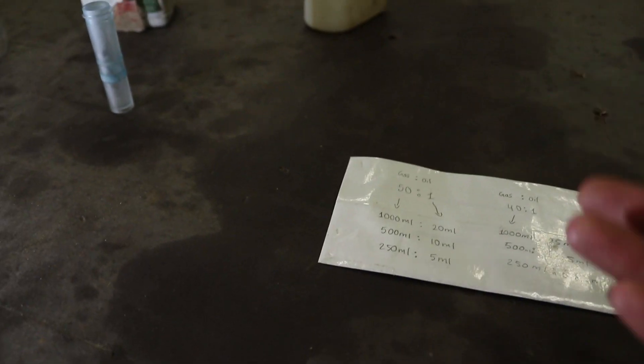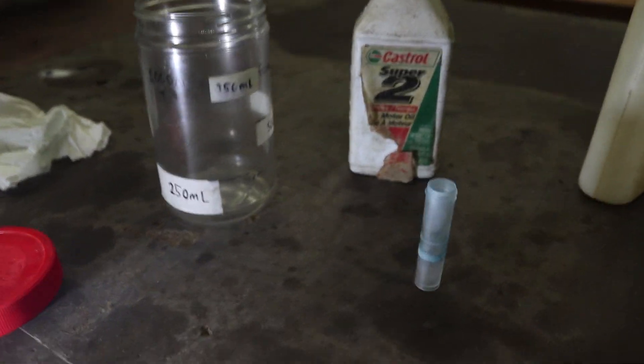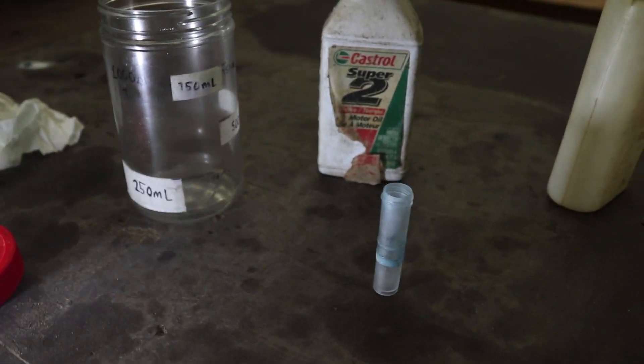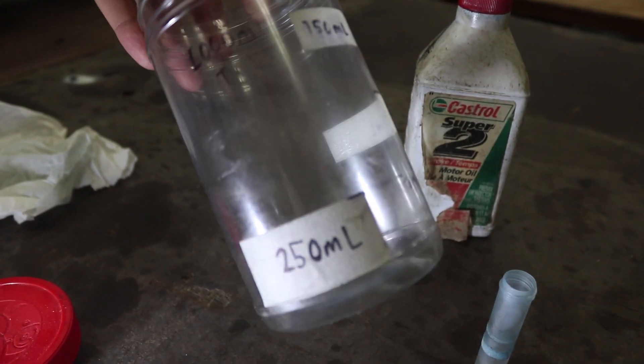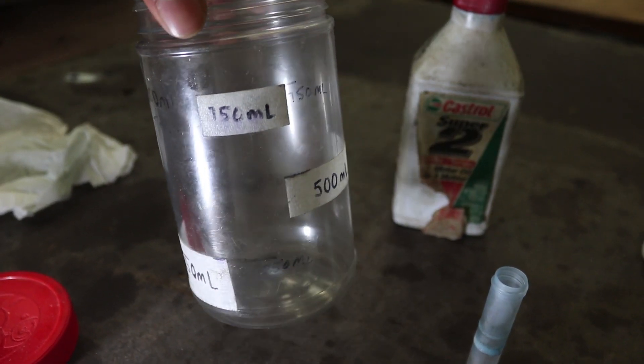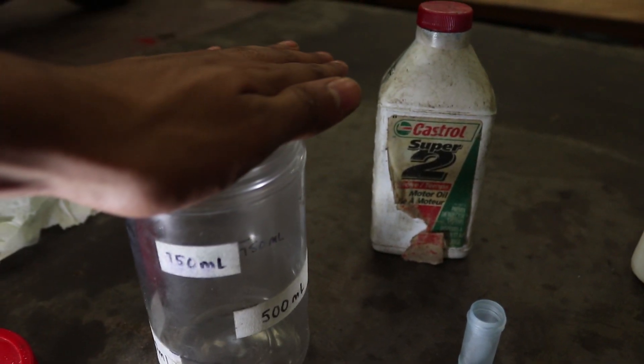Once you've got that down pat, my DIY setup which works pretty well is I use a container like this which I've measured out the 250 ml mark, the 500, 750, and then the full mark which is up to the rim. This is a 1 liter container.